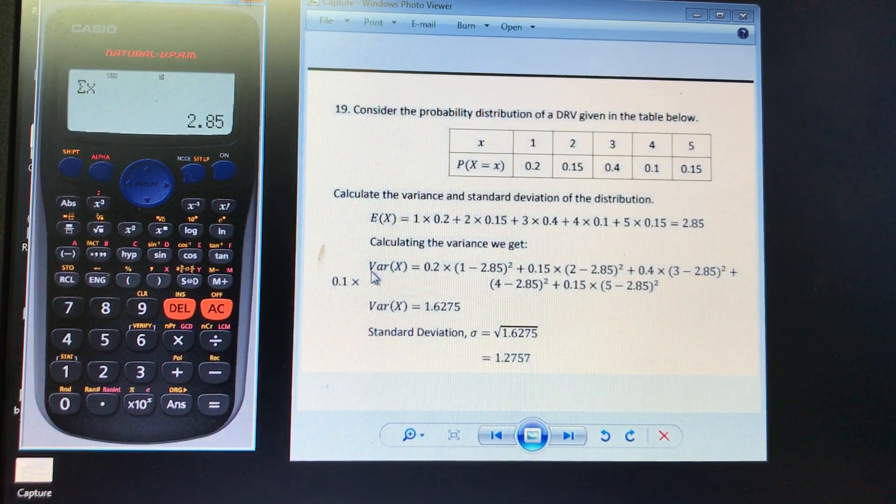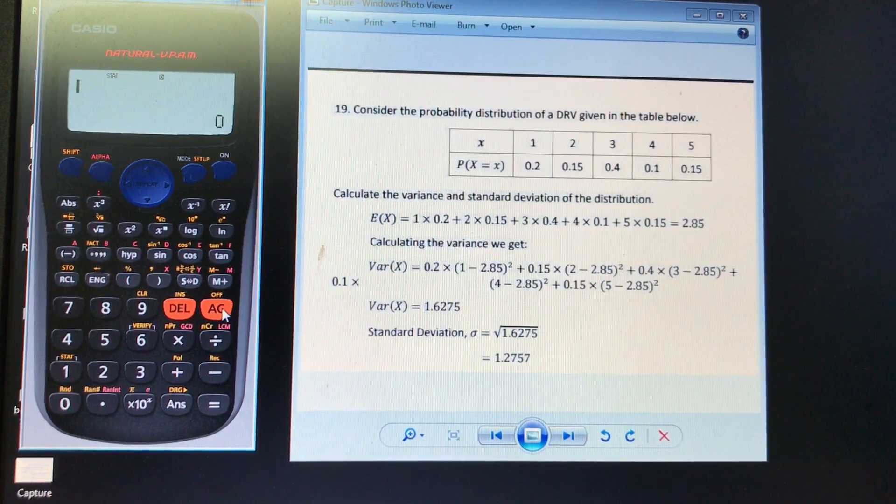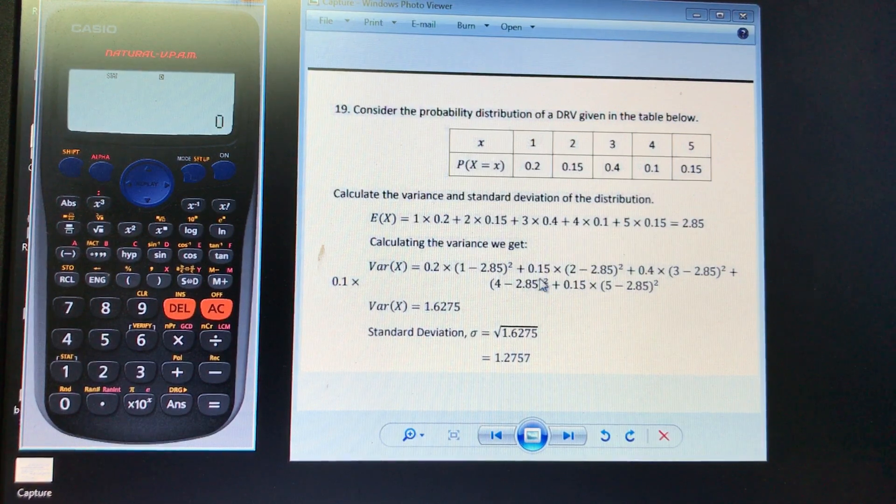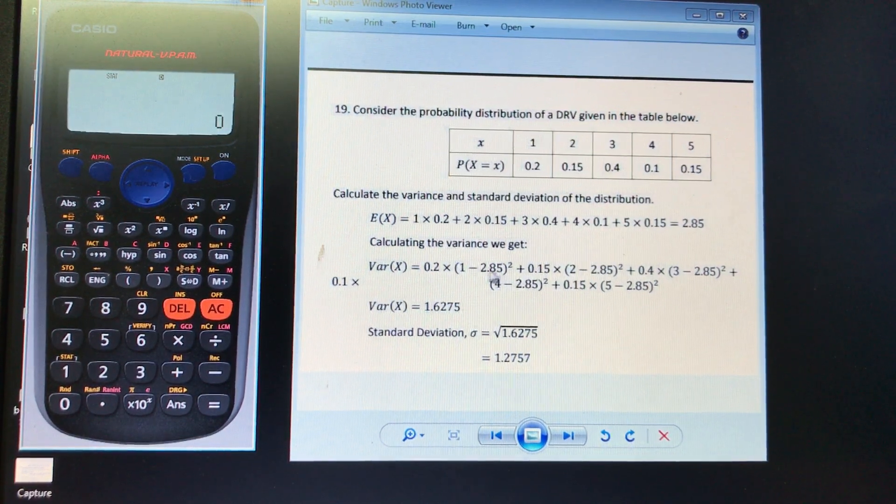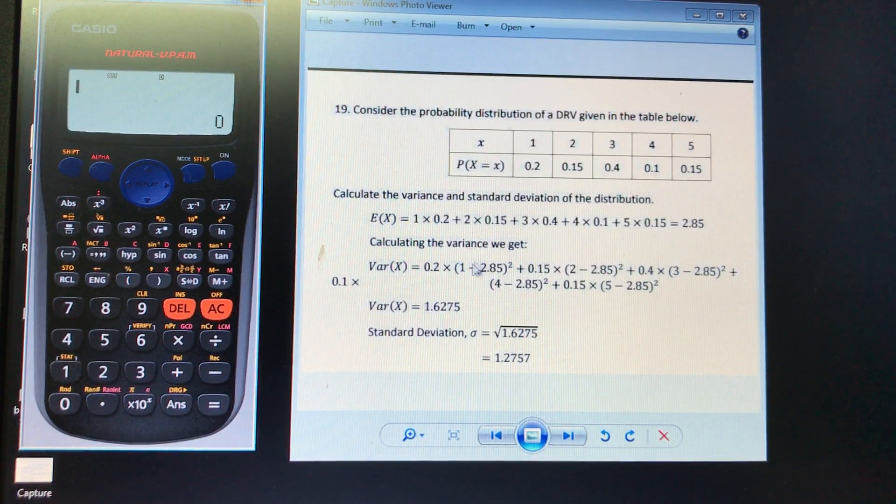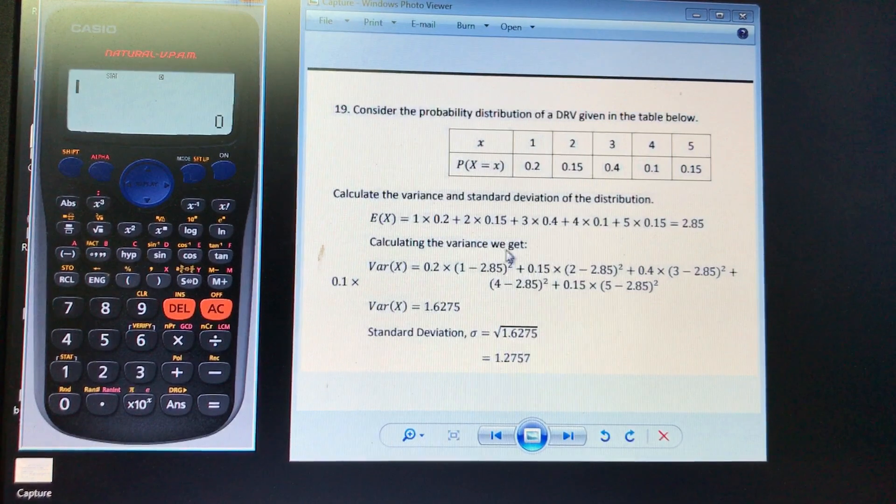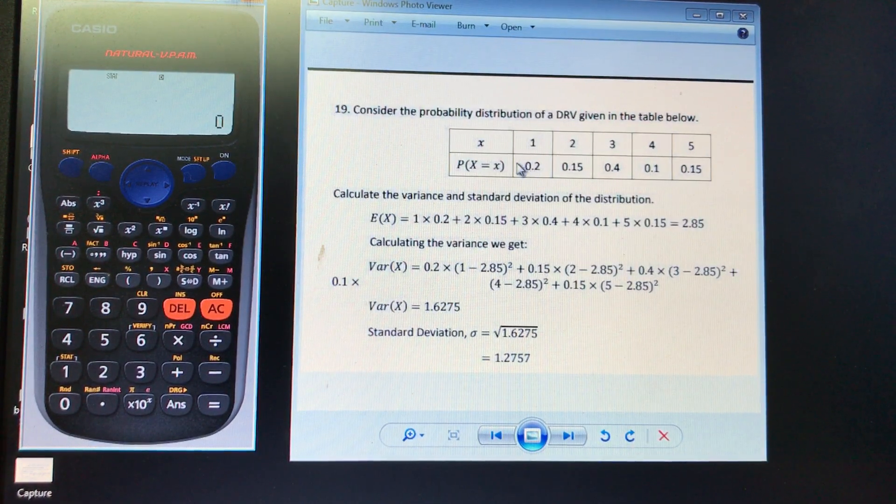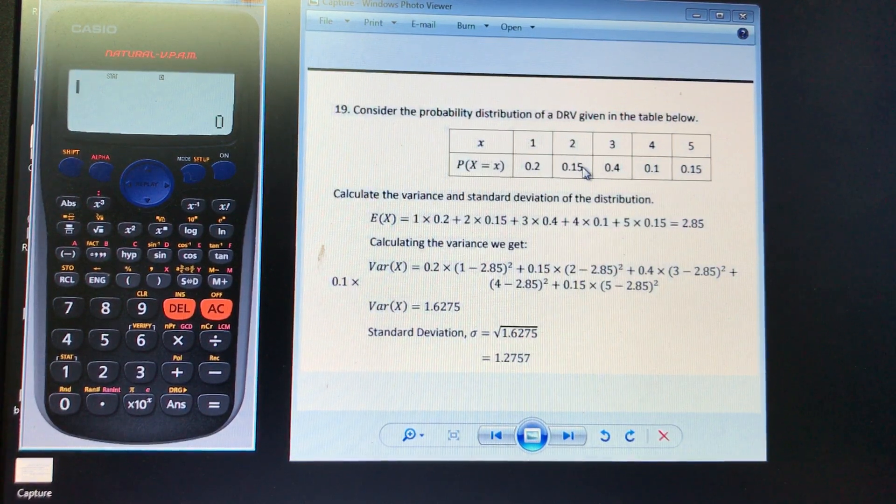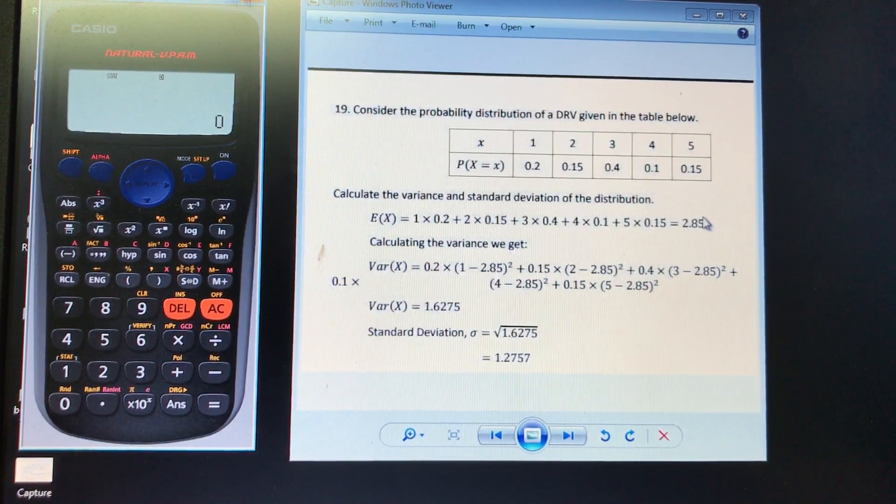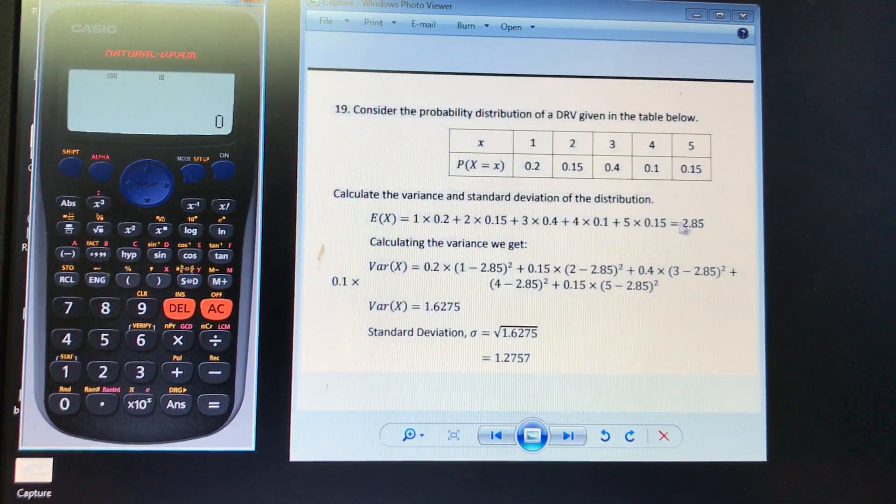To calculate the variance, again, we're going to talk two ways to do our variance. Remember variance is to calculate variance, one way we can do it. Here you can see you get the probability times 1 minus the expected value and then you square it. Another way you can do it is you square the score and multiply it by its probability, add that with the square of 2 multiplied by its probability, add that with the square of 3 times its probability all the way through, and then you subtract at the very end 2.85 squared. And that's what we're about to do.